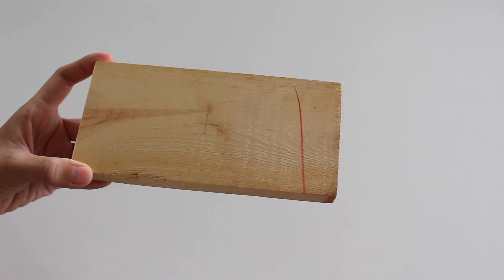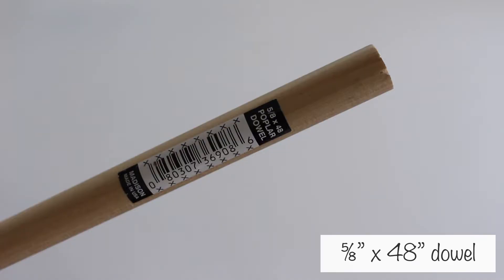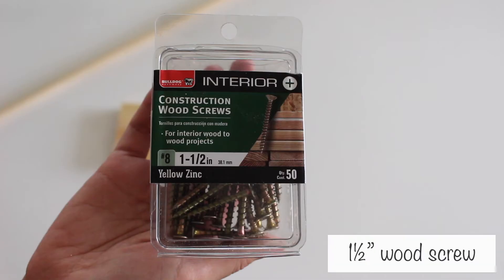Then, I made an X in the center. I used a 5/8 of an inch by 48 inch dowel for the tree trunk. I used this 1½ inch wood screw to connect the base and tree trunk.